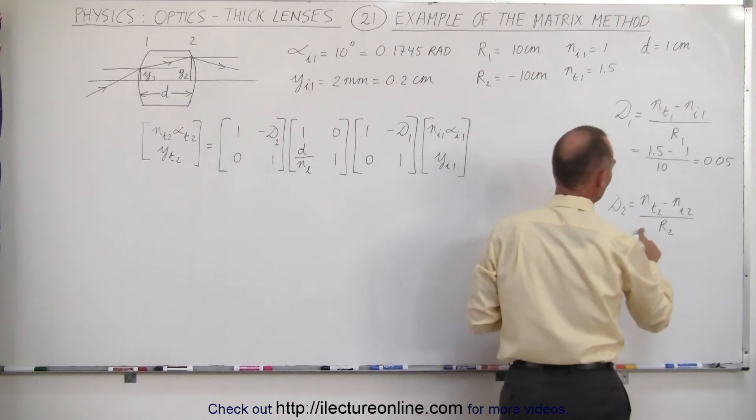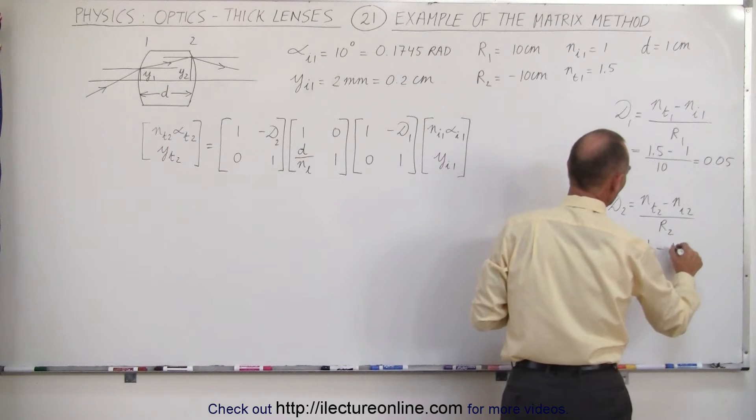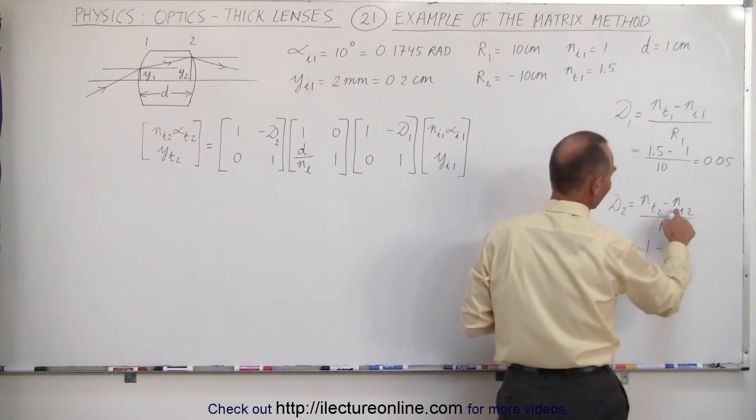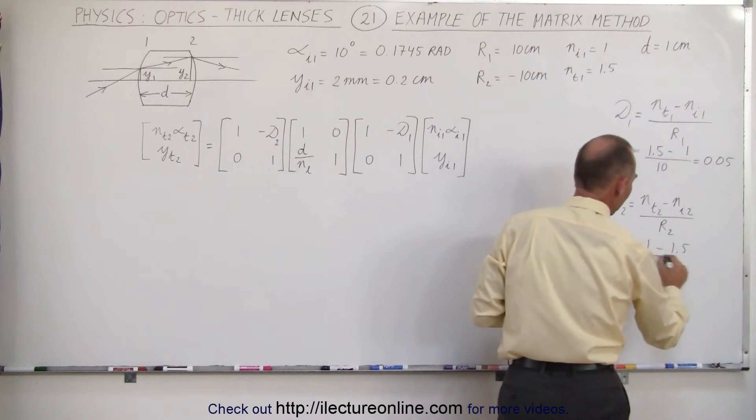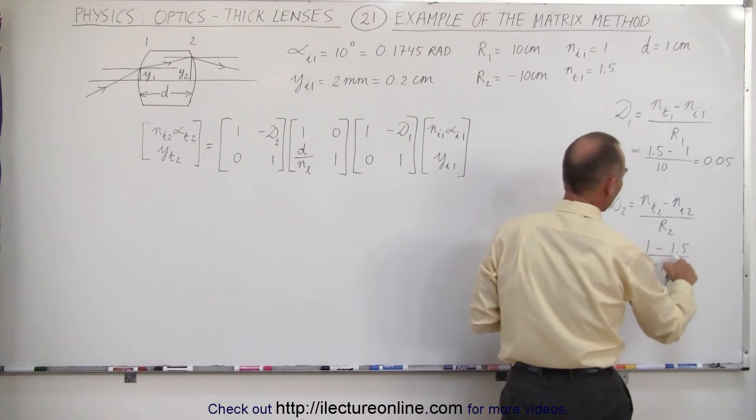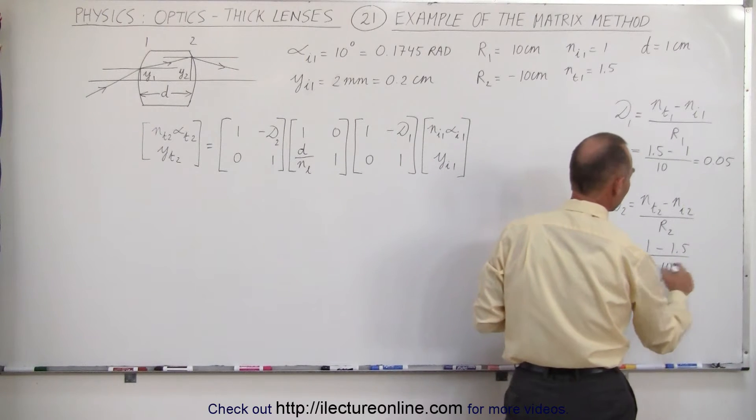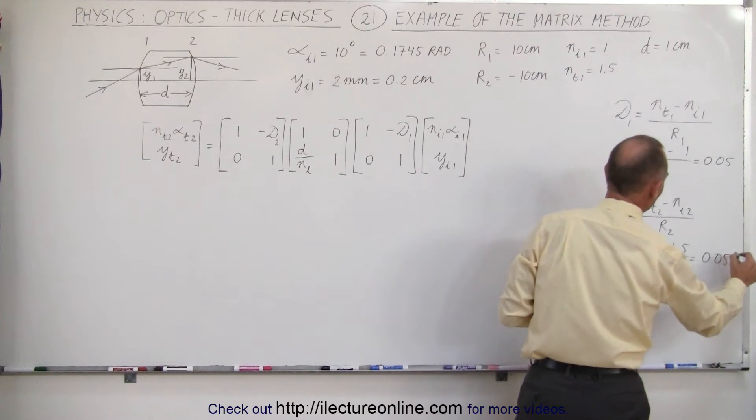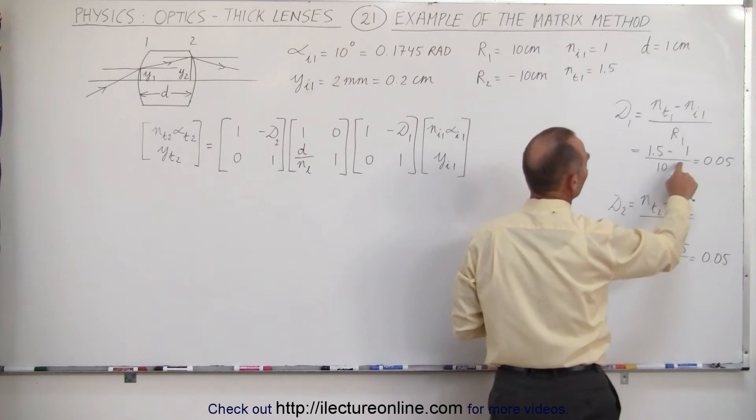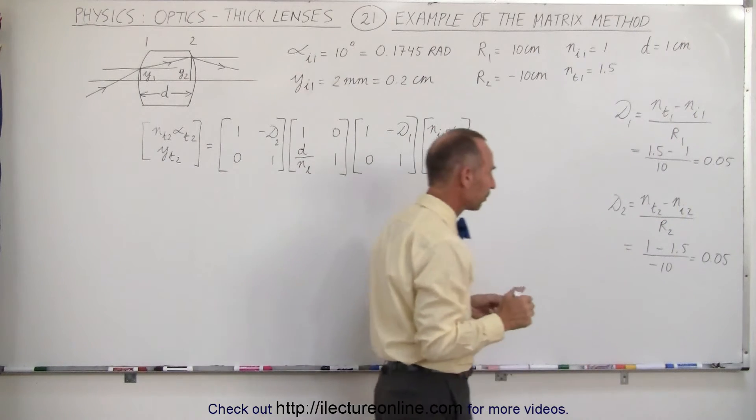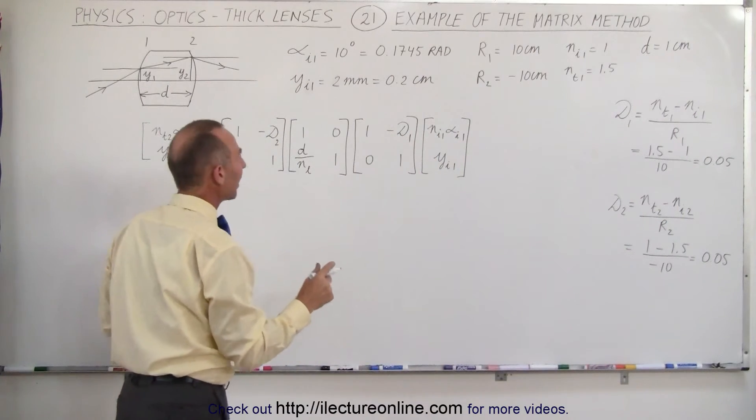And over here, this would be 1 minus 1.5, because that's inside the lens and that's outside the lens, divided by minus 10. The negative negates the negative, and this gives us 0.05, a positive. Let's quickly check that, 0.5 divided by 10, sure enough. So now that we know those values, let's plug in everything that we know.